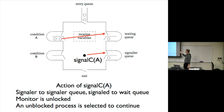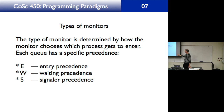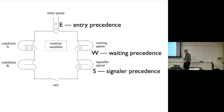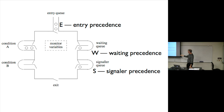So it's these three: entry, waiting, and signaler, and we're going to denote those by the letters E, W, and S. These are precedences. E is the entry precedence, W is the waiting precedence, and S is the signaler precedence.